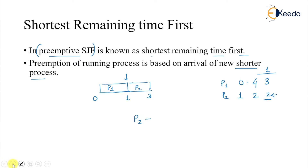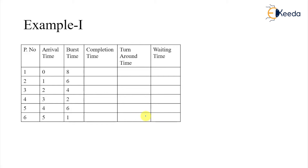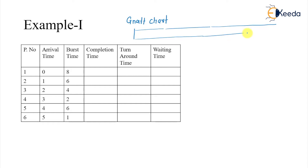Now let's look at the full example for Shortest Remaining Time First. We draw the Gantt chart and track remaining burst times. We start at time 0 and schedule P1 until time 1. At time 1, P2 arrives, and P1's remaining time drops from 8 to 7. Comparing 7 and 6, we find 6 to be lesser, so we preempt P1 and schedule P2.